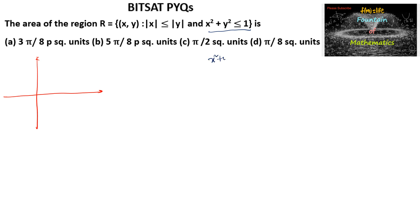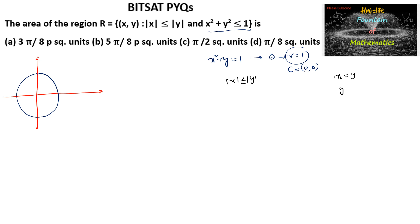X² + Y² = 1 represents a circle with radius 1 unit centered at (0, 0). We draw the circle of radius 1 unit. Also, |X| ≤ |Y| represents the region between the lines X = Y and X = -Y. Since |X| ≤ |Y|, we get the region interior to the circle bounded by those lines.